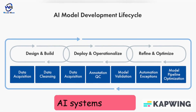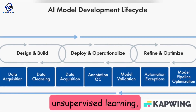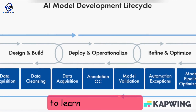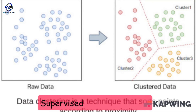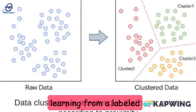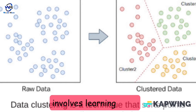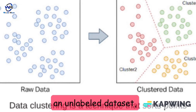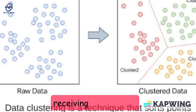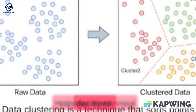AI systems can use supervised learning, unsupervised learning, or reinforcement learning to learn from the data. Supervised learning involves learning from a labeled dataset, unsupervised learning involves learning from an unlabeled dataset, and reinforcement learning involves learning by receiving feedback in response to previous decisions.